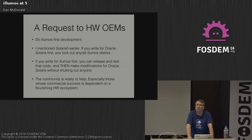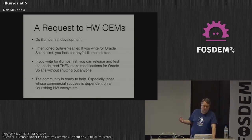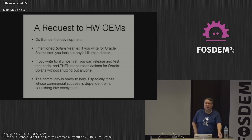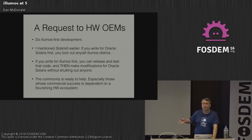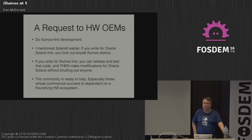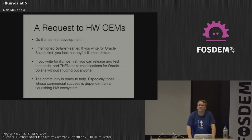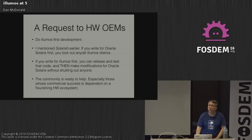One last favor: anybody who works with hardware OEMs, I would like to ask those people to do Illumos development first. If you write for Oracle Solaris first, you're handcuffed — you lock out all the Nexenta Store customers, all the SmartOS customers, all the OmniOS customers. If you write code for Illumos first under CDDL, it's a license perfectly acceptable to Oracle for pulling in, and you can make modifications for Oracle without shutting anyone else out. We're ready in the community to help — we've talked to Intel and they've been generous with hardware. We'd like to continue that and have a flourishing hardware ecosystem for Illumos.